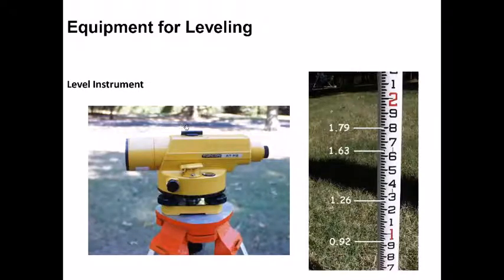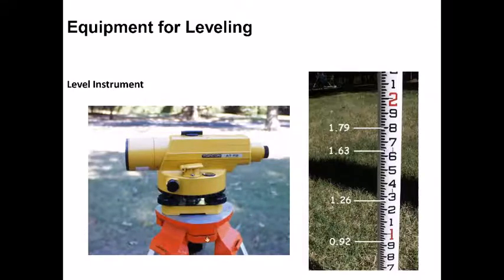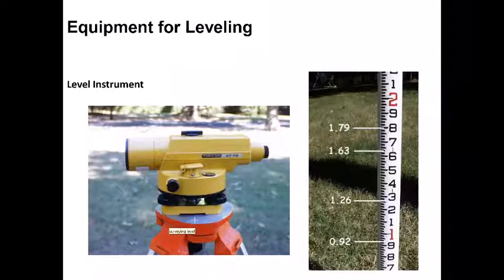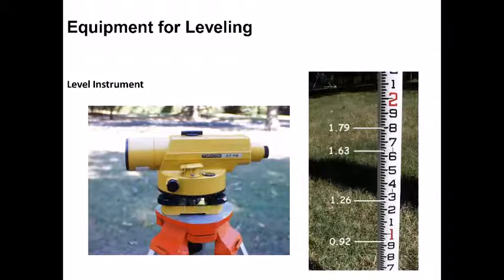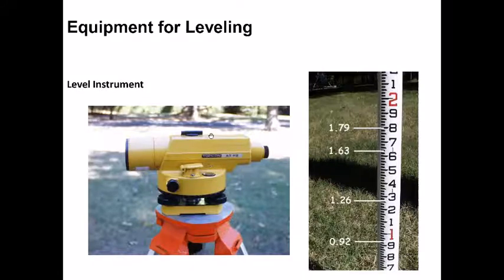Here's a picture of a Topcon auto level, similar to the model we have in our lab. You can see the circular bubble, the side view, the eyepiece, objective lens, the horizontal slow motion screw, and the leveling screws, with the tripod beneath. To level the instrument, first roughly level it using the tripod legs, then use the three leveling screws for fine adjustment. When you rotate these leveling screws, the instrument tilts at that position, allowing you to tilt it until the bubble comes to the center.